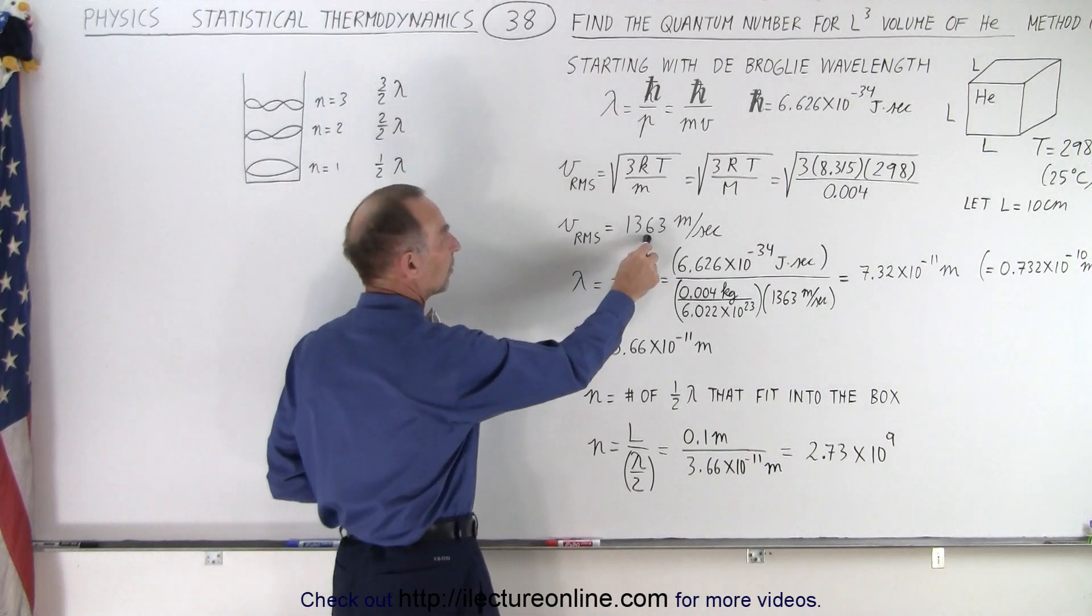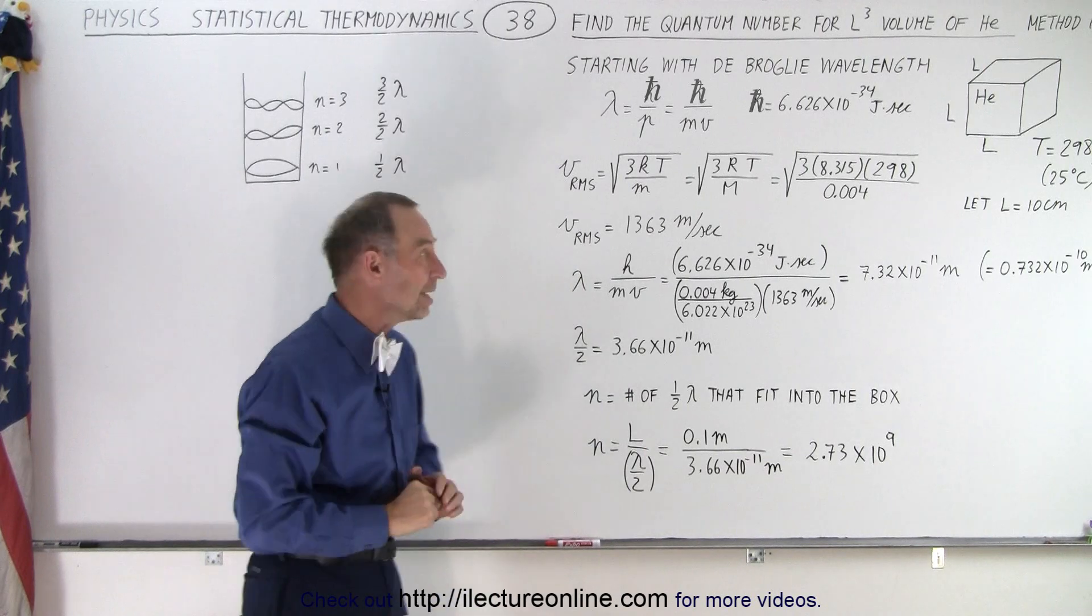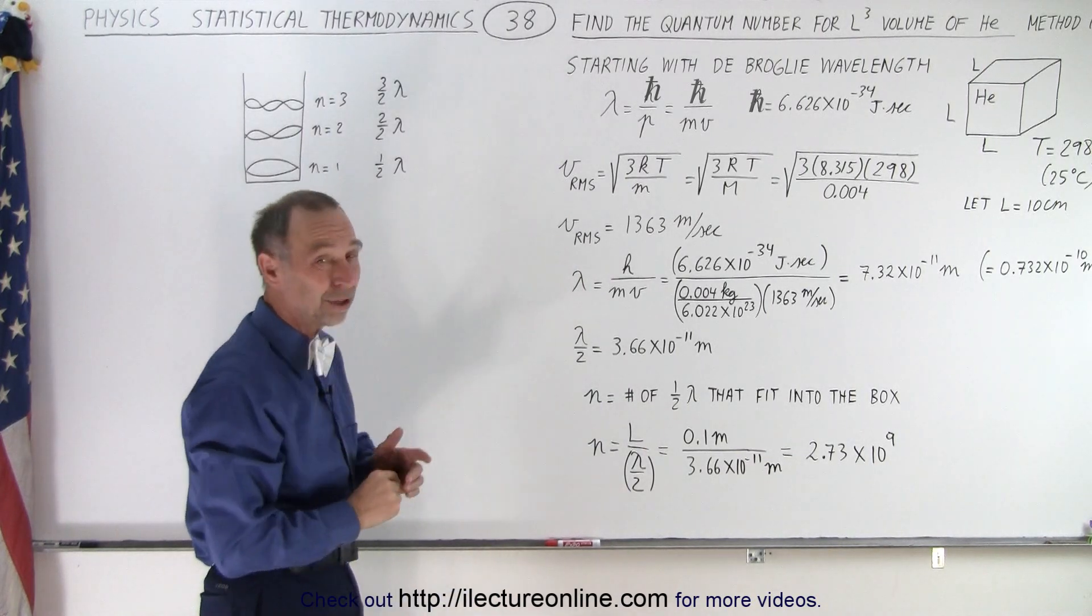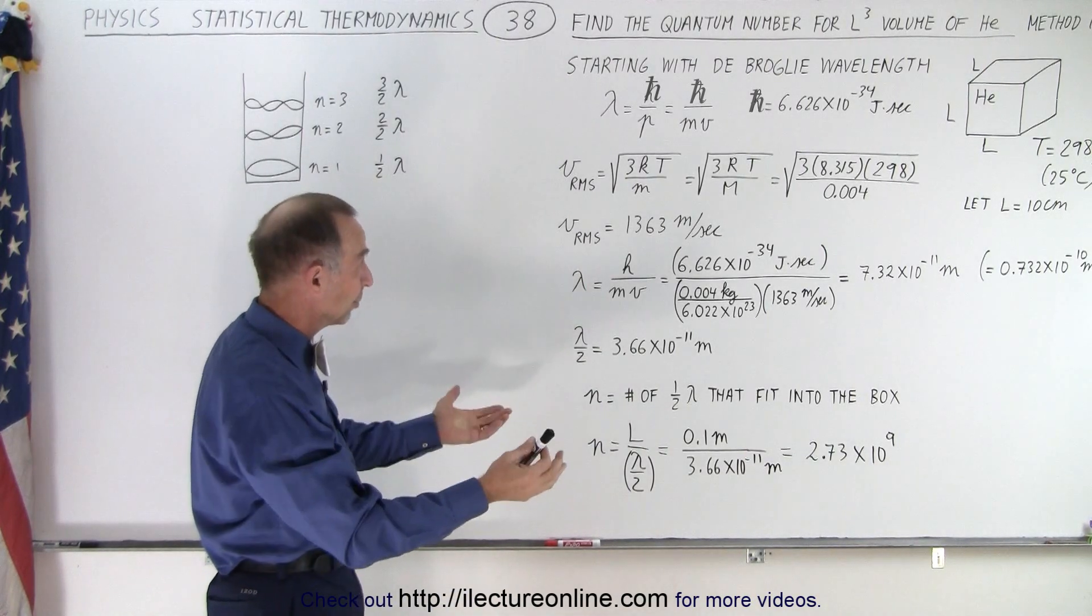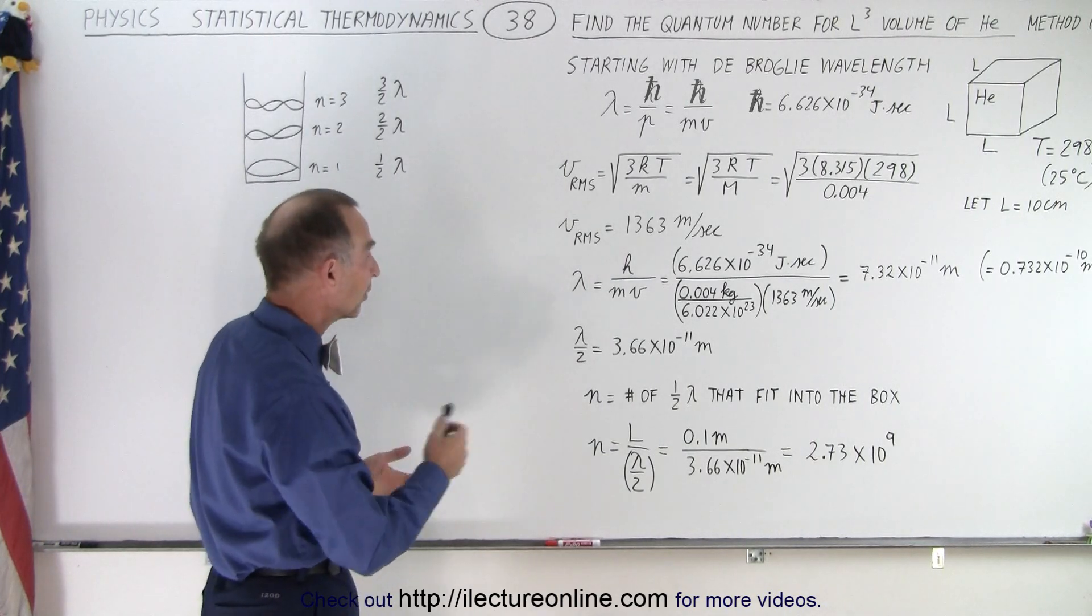When we calculate the RMS velocity of a helium molecule at room temperature, it's about 1363 meters per second. That's moving along quite fast. That's about 11 soccer fields, so to speak, in one second.